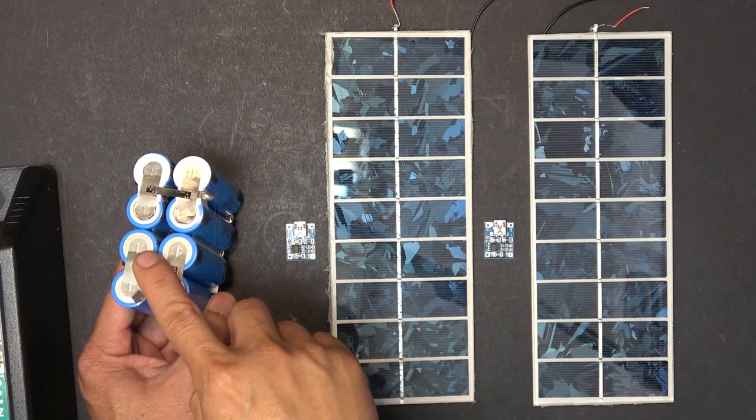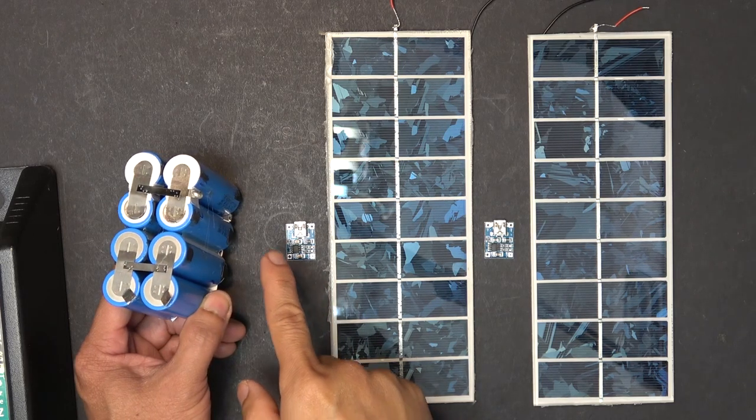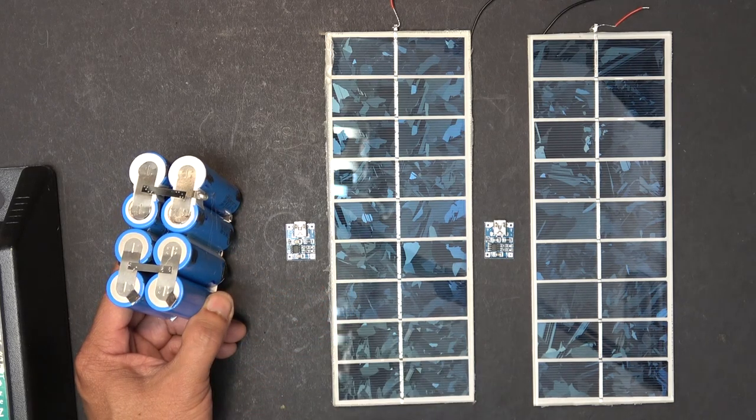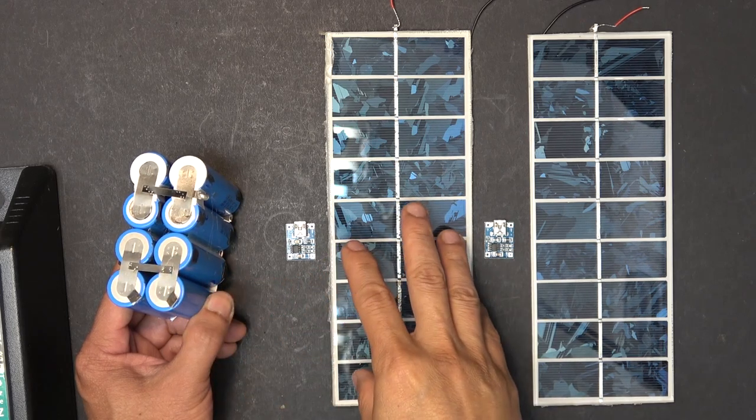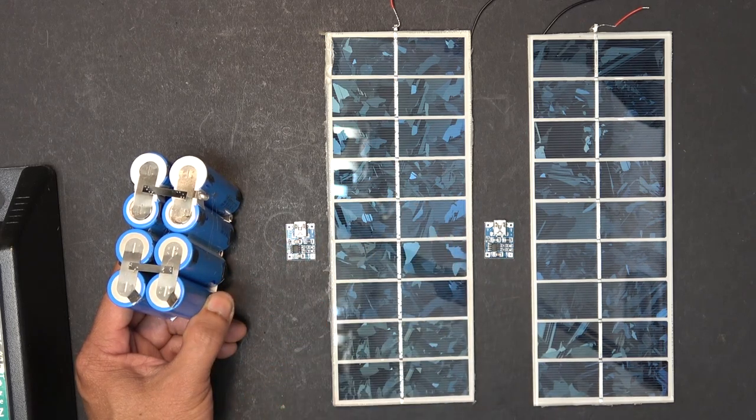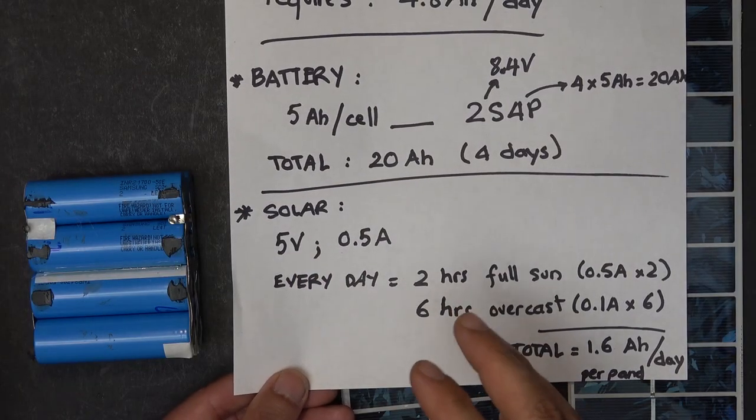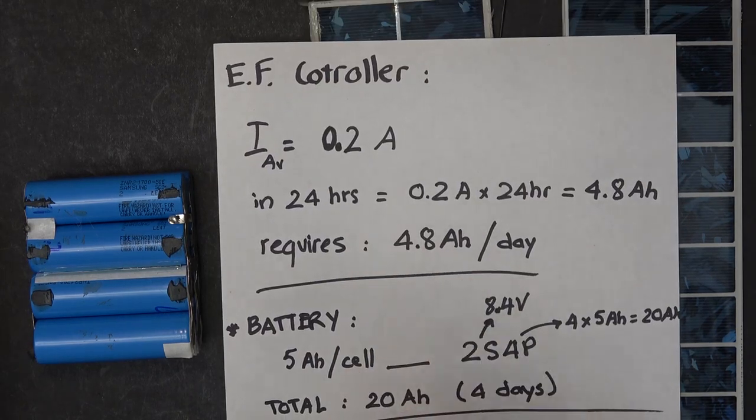So the first setup will charge these four cells and then the second setup will charge these four cells. Each TP4056 board will guarantee to charge the battery to 4.2 volts and then it will stop. So this is how you can balance charge a lithium-ion battery using a solar panel and a TP4056 board.